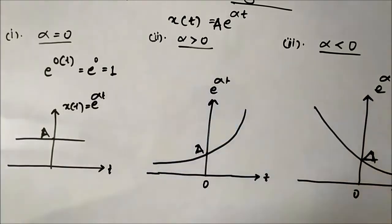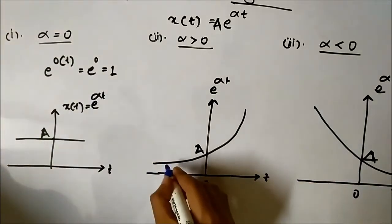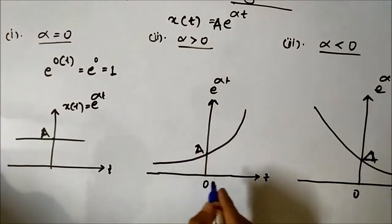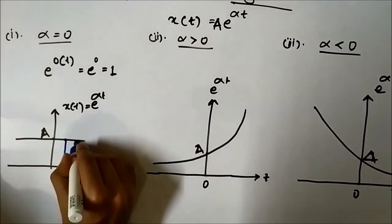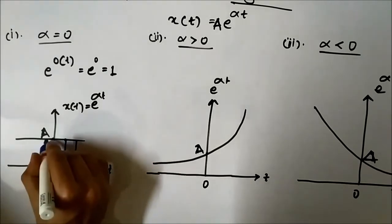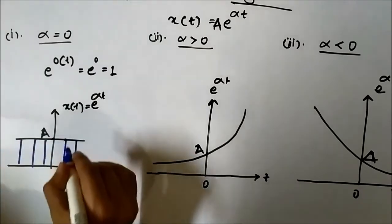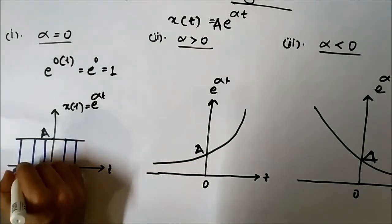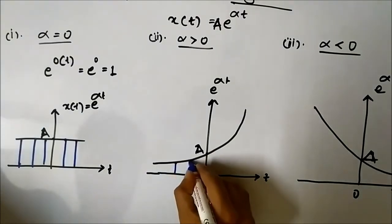This is how the exponential signal looks in the continuous time domain. To convert it into the discrete time domain, we plot the signal at equidistant time intervals. So if we plot the signal at various equidistant points, it will look like this in the discrete time domain — we just take sample points at equidistant time intervals.